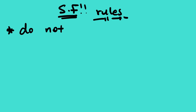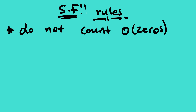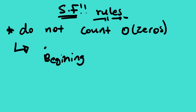The first thing you need to know is that we do not count zeros — but there is an exception. We do not count zeros provided there is no decimal point and the zeros are at the beginning. We also do not count them if there is no dot and the zeros are at the end. This is the most important rule. All other values are counted.